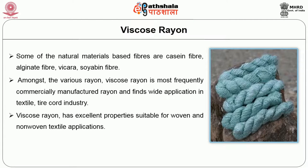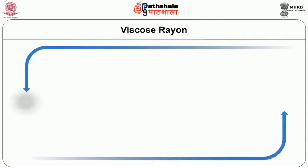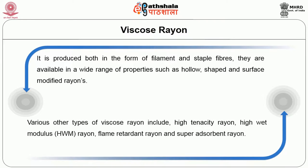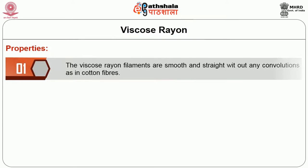Viscose Rayon has excellent properties suitable for woven and non-woven textile applications. Viscose Rayon is produced both in filament and fiber and staple forms. They are available in a wide range of properties, such as hollow fibers, shaped fibers, and surface modified fibers. Various other types of rayons include High Tenacity Rayon, High Wet Modulus Rayon or HWM, Flame Retarded Rayons, and Super Absorbent Rayons.